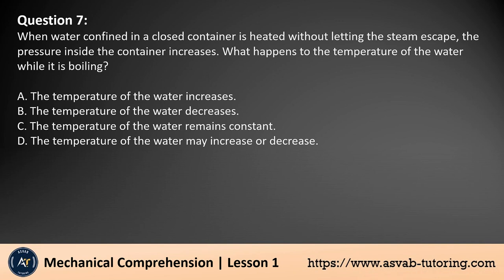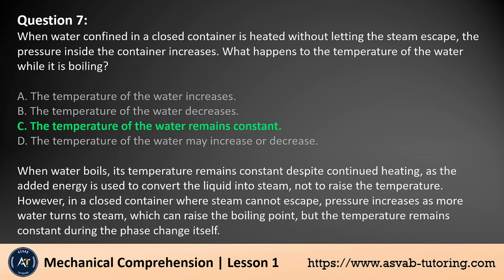Question 7. When water confined in a closed container is heated without letting the steam escape, the pressure inside the container increases. What happens to the temperature of the water while it is boiling? A. The temperature of the water increases. B. The temperature of the water decreases. C. The temperature of the water remains constant. D. The temperature of the water may increase or decrease. The answer is C. When water boils, its temperature remains constant despite continued heating, as the added energy is used to convert the liquid into steam, not to raise the temperature. However, in a closed container where steam cannot escape, pressure increases as more water turns to steam, which can raise the boiling point, but the temperature remains constant during the phase change itself.